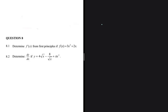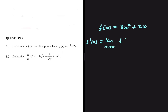Let's determine f prime of x if f of x equals 3x squared plus 2x using first principles. That is to say that f prime of x equals the limit as h tends to 0 of f of x plus h minus f of x divided by h. We'll solve the numerator first so that our solution doesn't get messy, and then substitute it back into f prime of x.